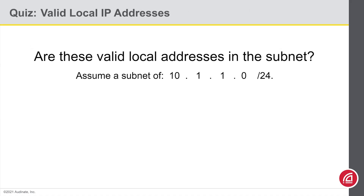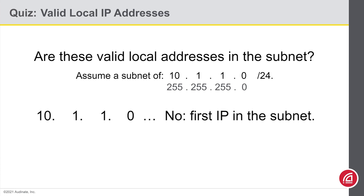Quick quiz again. I'll offer some IP addresses, and you tell me if these are available for use on my network. Let's assume that we have a subnet of 10.1.1 slash 24 — that means we have a subnet mask of 255.255.255.0. So is 10.1.1.0 available for our use on this subnet? No it isn't. The first and last IP addresses in the range are not available for our use.